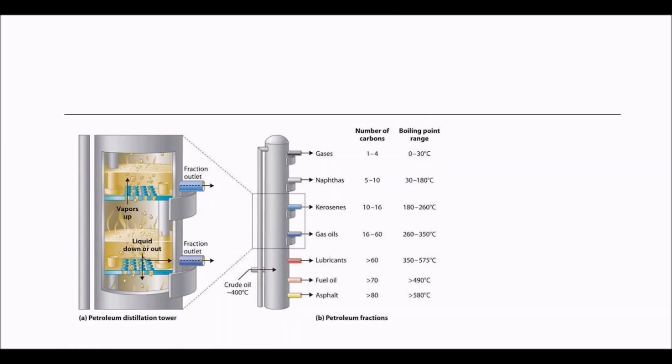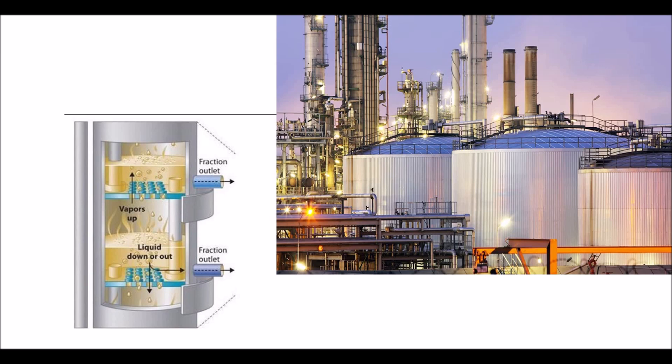During the refining process, crude oil is put into a boiler and turned into vapors to separate the impurities. The vapors then move to a distillation chamber, which turns the vapors back into a liquid.